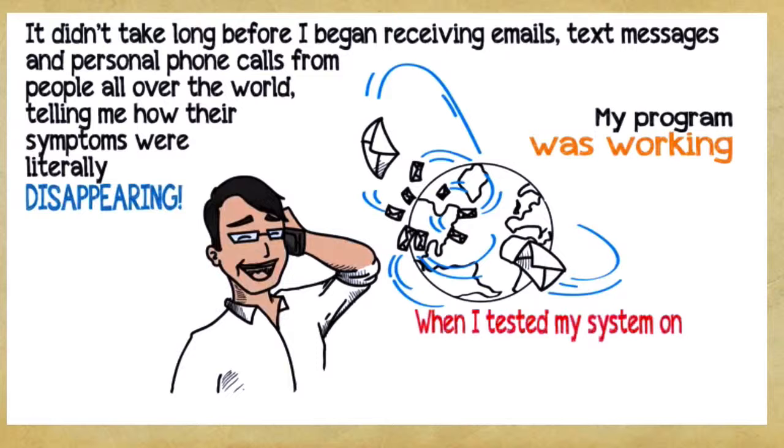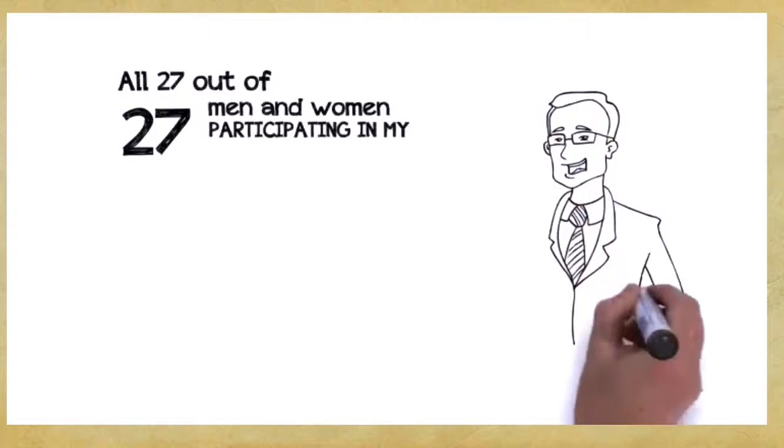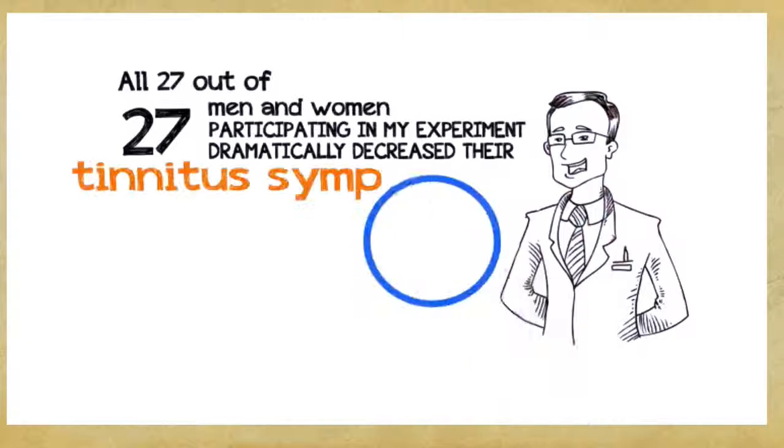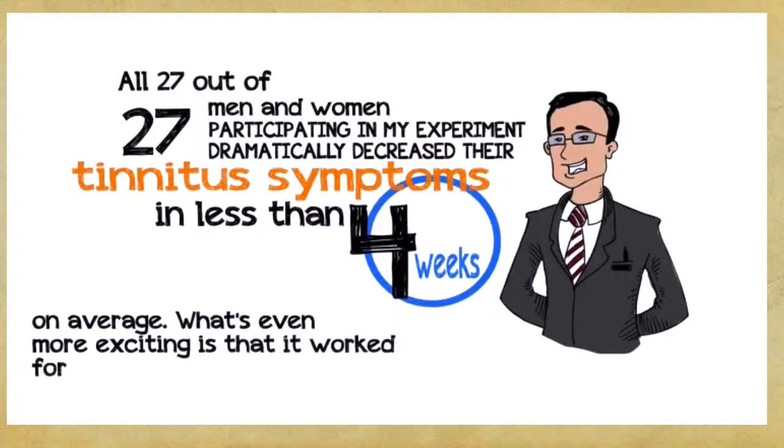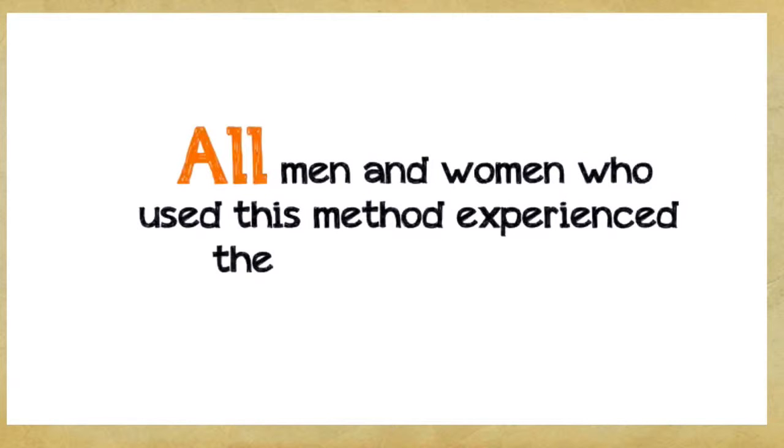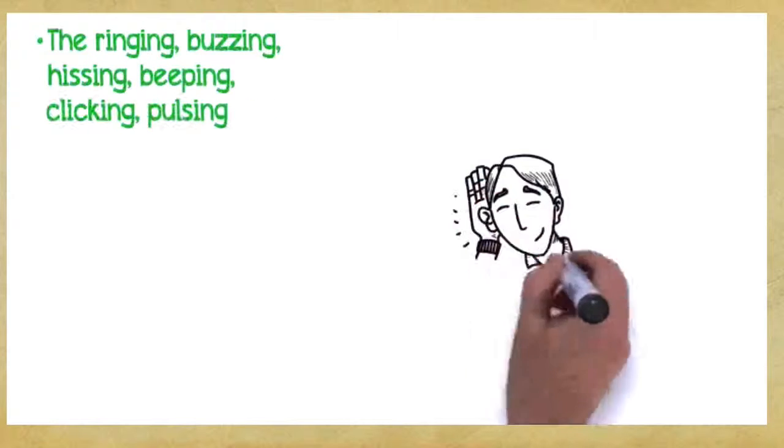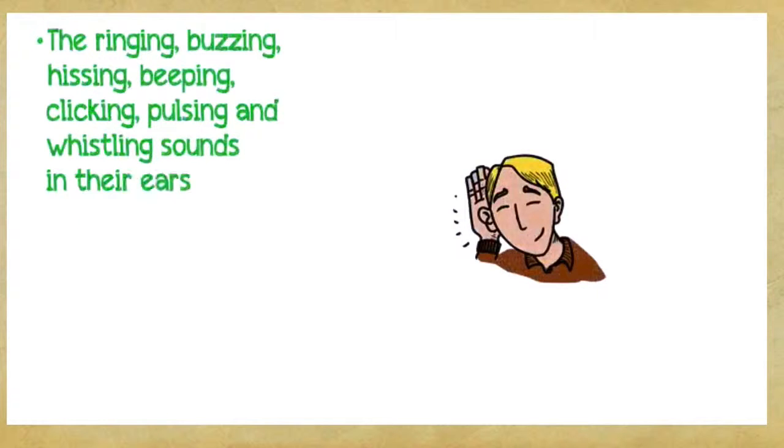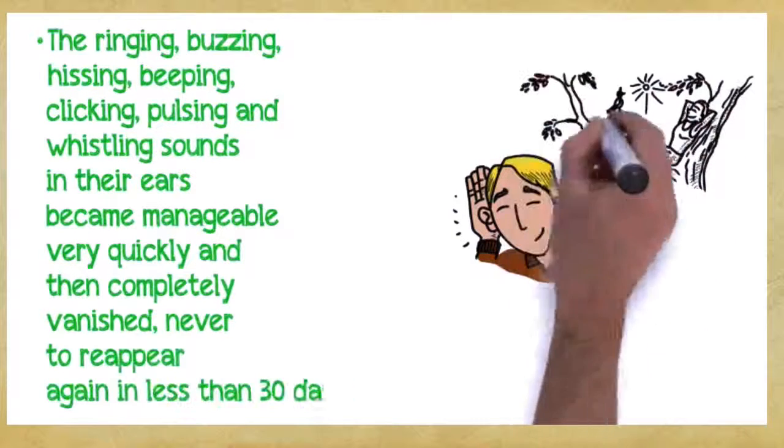I sent off my five-step protocol to several dozen tinnitus sufferers and waited for them to tell me how it worked. It didn't take long before I began receiving emails, text messages, and personal phone calls from people all over the world telling me how their symptoms were literally disappearing. My program was working and more and more people were asking me for help. When I tested my system on other tinnitus sufferers, it yielded the same shocking and groundbreaking results. All 27 out of 27 men and women participating in my experiment dramatically decreased their tinnitus symptoms in less than four weeks on average. What's even more exciting is that it worked for all types of tinnitus and levels of severity, and for men and women of any age.